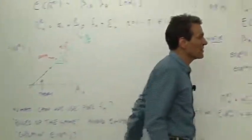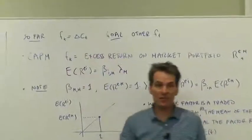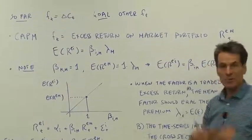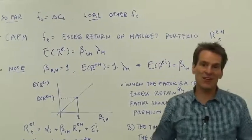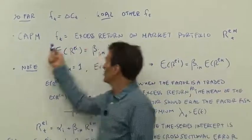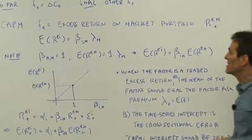So far we've got one factor model in mind worth keeping in mind: the consumption-based model where the factor is consumption growth. Our goal is to put in other factors, the factors that are used most commonly in practice. The Capital Asset Pricing Model uses as a factor the excess return on the market portfolio.